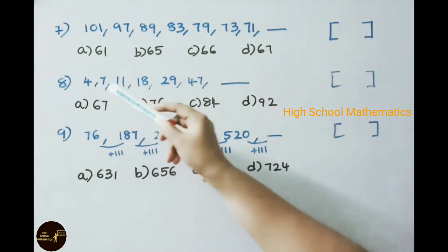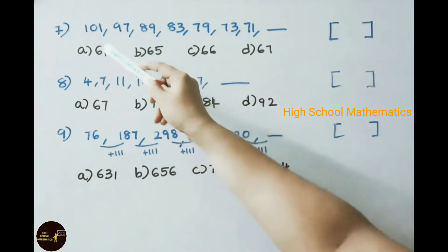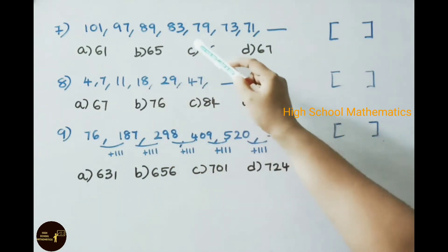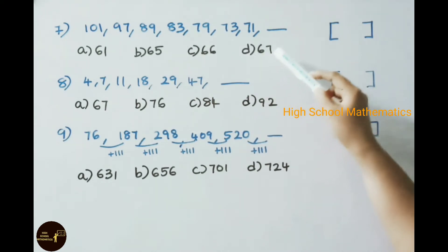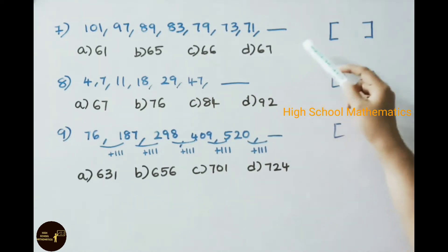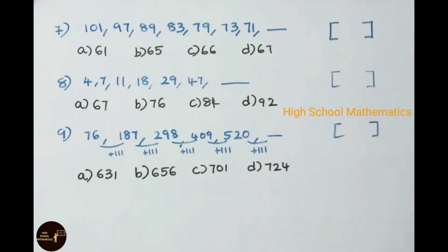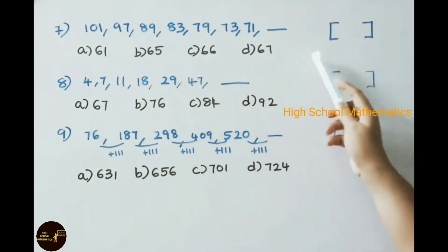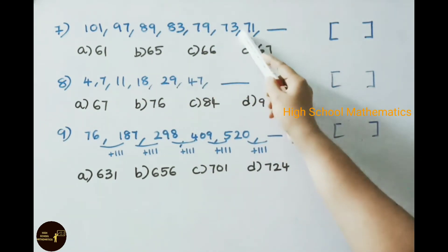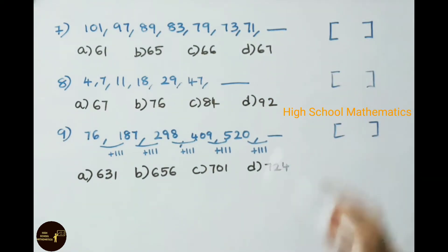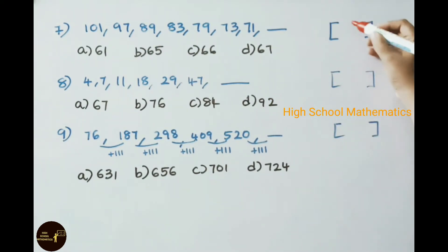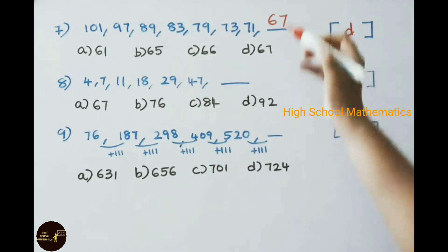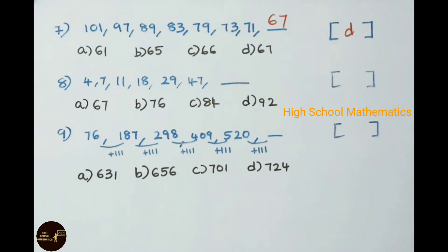Seventh practice problem: 101, 97, 89, 83, 79, 73, 71 — find the next term. It is a prime series given in reverse order. The prime number before 71 is 67. The answer is option D, 67.